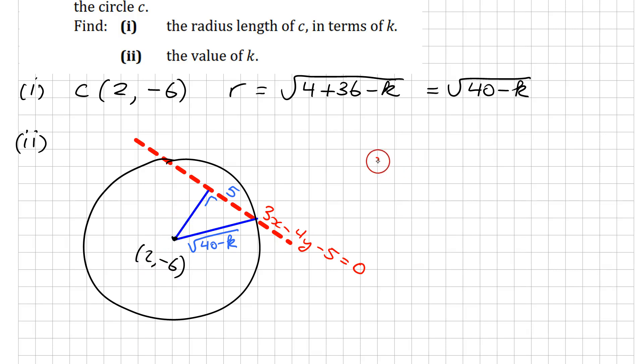We'll set that up then. So my distance, perpendicular distance, is equal to 3 times bracket, bracket minus 4 times bracket, bracket minus 5, all over the square root of 3 squared plus minus 4 squared. And then I'm going to fill in my point for the center of my circle, which is 2 minus 6.